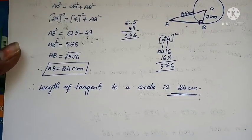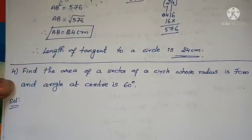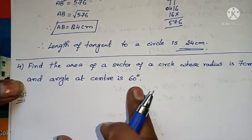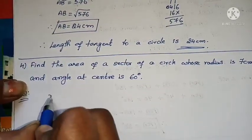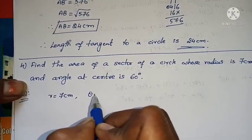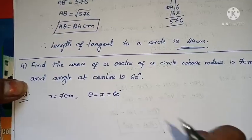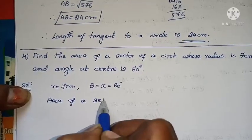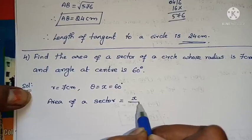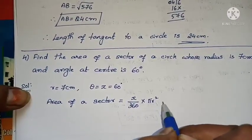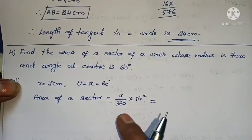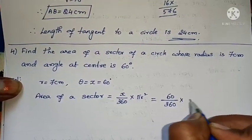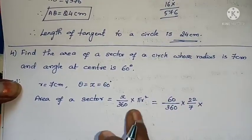Next question: find the area of a sector of a circle whose radius is 7 cm and angle at the center is 60 degrees. Let the angle theta equal 60 degrees. The formula for area of a sector equals x divided by 360 into pi r squared.